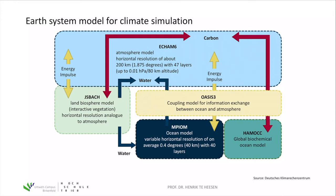We also have the ocean components. There is an ocean model with a variable horizontal resolution and different numbers of layers, and separately a global biochemical ocean model. Both models interact with the other submodels — exchanging information with the atmosphere and the biosphere model. There is a separate coupling layer to transfer all data between the atmosphere and the ocean.